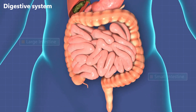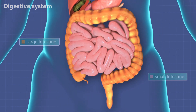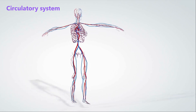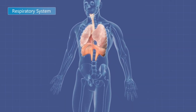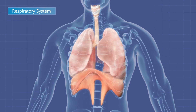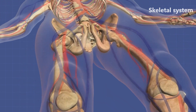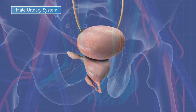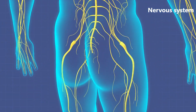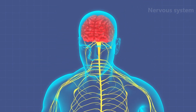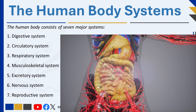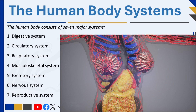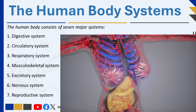In humans, there are seven essential systems: the digestive system, which processes food; the circulatory system, which transports blood and nutrients; the respiratory system, which enables breathing and gas exchange; the musculoskeletal system, which provides structure and movement; the excretory system, which removes waste from the body; the nervous system, which controls body functions and responses; and the reproductive system, which allows for reproduction. Together, these levels of organization — from cells to tissues, organs, systems, and ultimately the entire organism — ensure that life processes function smoothly and efficiently.